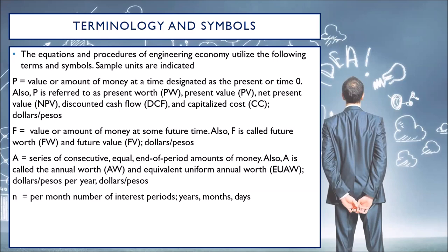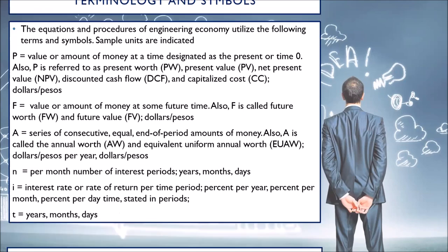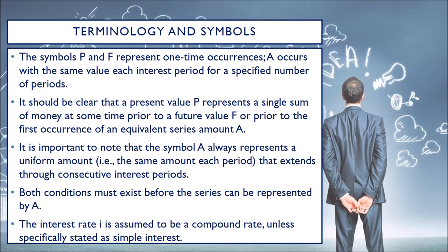N is the number of interest periods — it can be in terms of years, months, or days. I is the interest rate or rate of return per time period, usually expressed as percent per year, percent per month, or percent per day. The symbols P and F represent one-time occurrences, while A occurs with the same value each interest period for a specified number of periods. P and F are also referred to as single payment amounts, while A is referred to as a series of payment amounts.